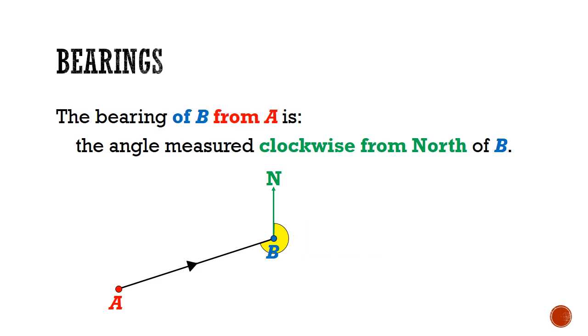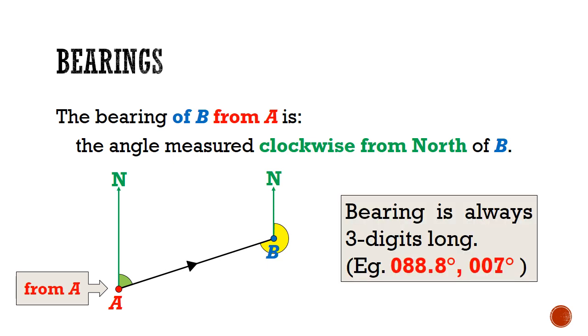Similarly, if I want the bearing of B from A, I need to be clear that I am from A. So I need the angle clockwise from the north reference ray, all the way to the ray AB. This angle is shown in green. Note that bearing is always 3 digits long before the decimal place. For example, I can give a bearing of 088.8 degrees or 007 degrees, but never just 7 degrees.